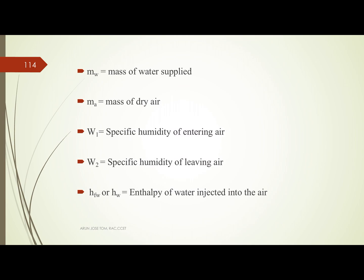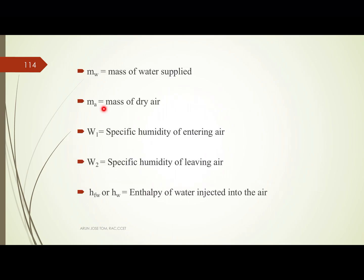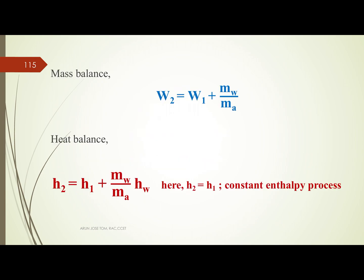HW is the enthalpy of water injected into the air. From mass balance: W2 = W1 + (MW / MA). From energy balance: H2 = H1 + (MW / MA) × HW. Since MW × HW is negligible, H2 is approximately equal to H1, confirming a constant enthalpy process.